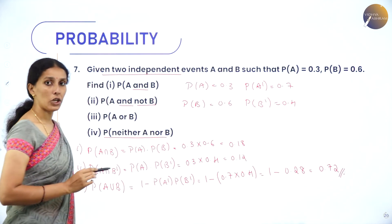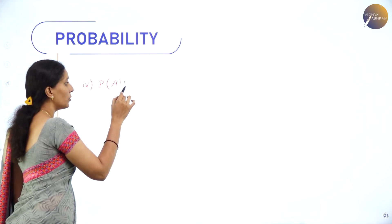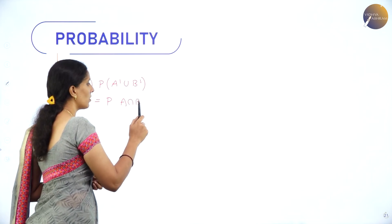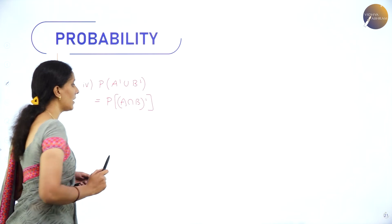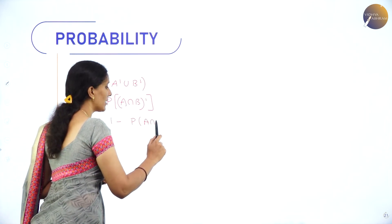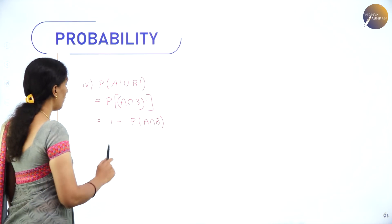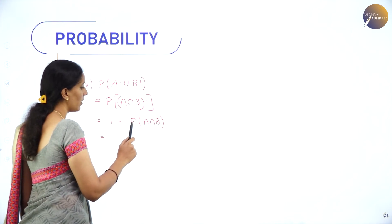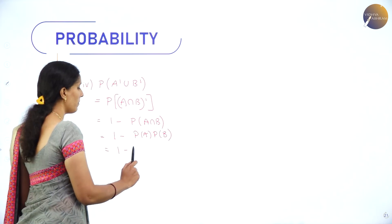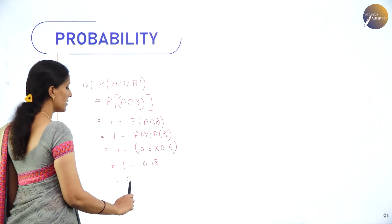For (iv), P(neither A nor B) = P(A'∪B'). By De Morgan's law, A'∪B' = (A∩B)'. So P = 1 − P(A∩B) = 1 − P(A)·P(B) = 1 − 0.3 × 0.6 = 1 − 0.18 = 0.82.